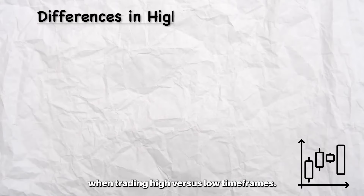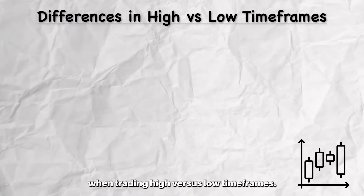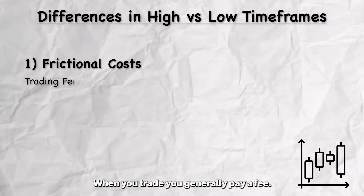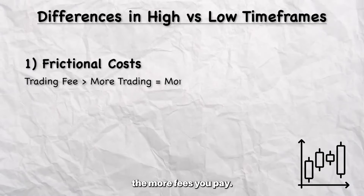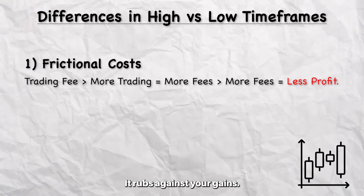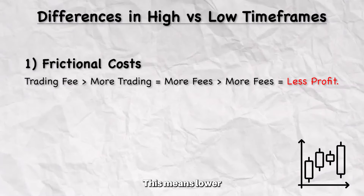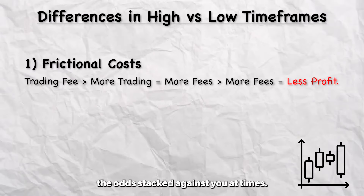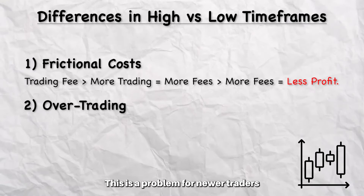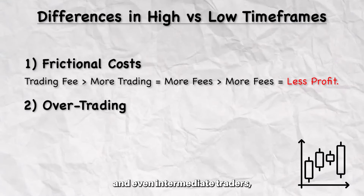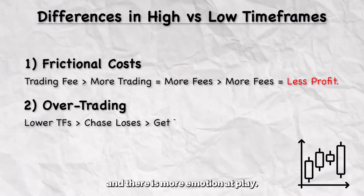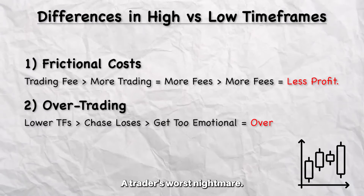There are two main differences when trading high versus low time frames. The first being frictional costs. When you trade, you generally pay a fee. The more trading you do, the more fees you pay, and the less profit there is — it rubs against your gains. This means lower time frames can have the odds stacked against you at times. The second point is over trading. This is a problem for newer and even intermediate traders, where on low time frames you are easier to chase losses and there is more emotion at play — a trader's worst nightmare.